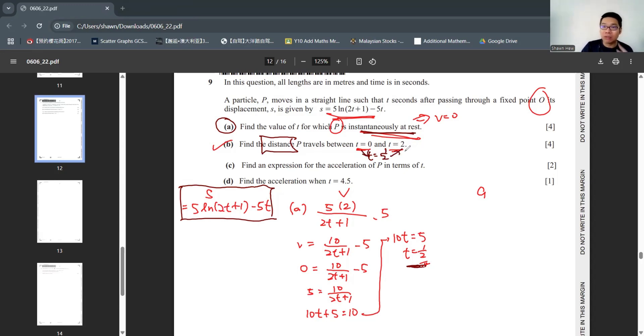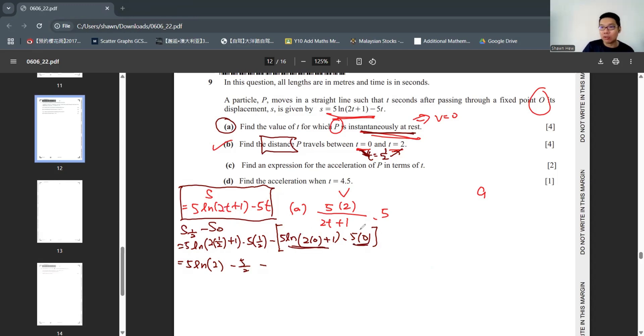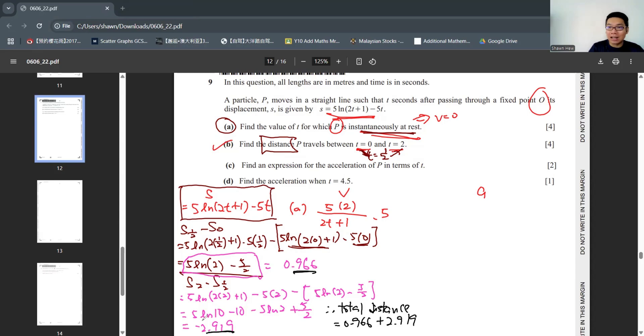So when the distance involves changing in direction. We need to separate different directions distance. So from T equals to 0 to T equals to half is one direction. And then they change direction from T equals to half to T equals to 2. So we find separately. S half minus S zero to count the distance for this first part. ln 1 is 0. 5 times 0 is still 0. The second part S2 minus S half. S half we know is this. Key in calculator. This part also we key in calculator. Total distance. We just sum the magnitude. Do not add this negative because it's just showing you to go in another direction. So the answer is 3.88. We go to part C. Find the expression for acceleration. From here to here is differentiation. We rearrange this first. A is negative 10. 2t plus 1 power minus 2 times 2. So part C done. Part D asks you to find acceleration when time is 4.5. Just substitute in. Negative 0.2. Done.